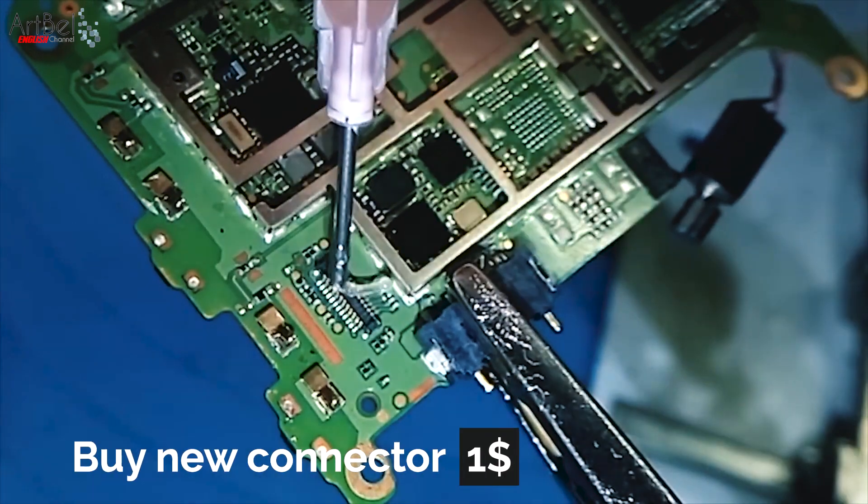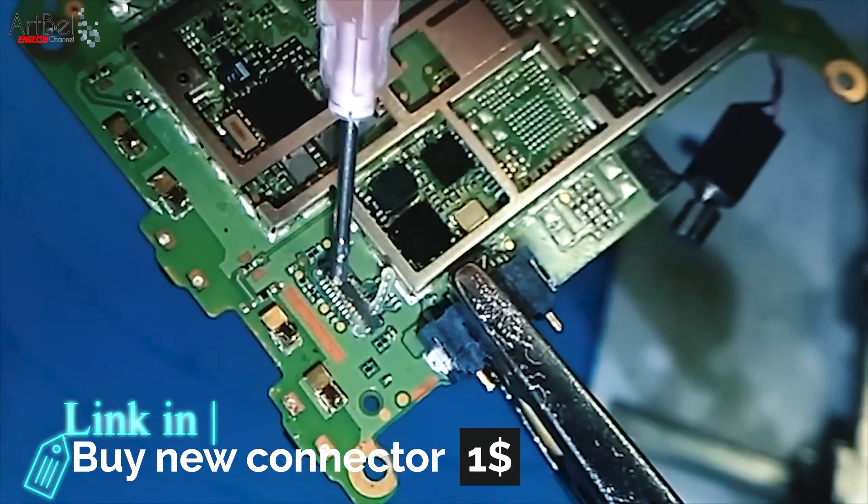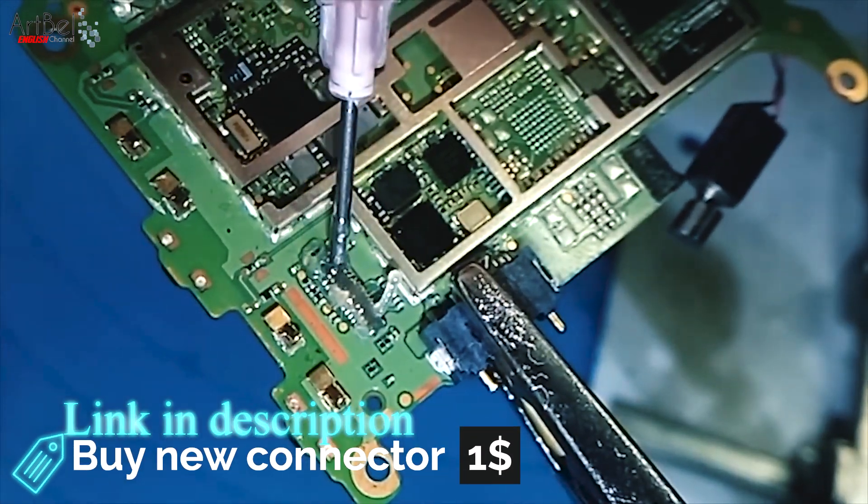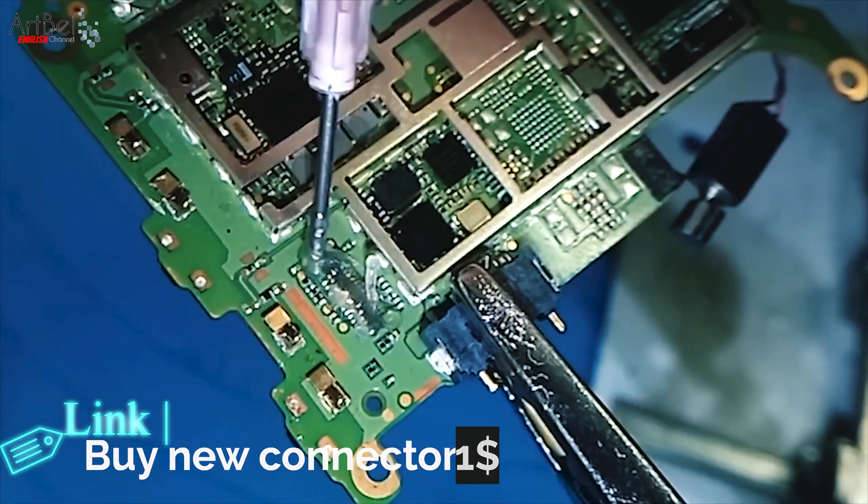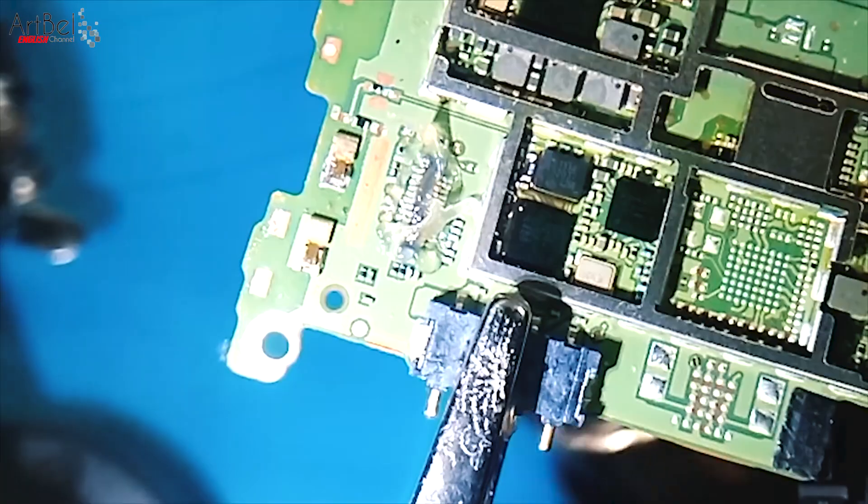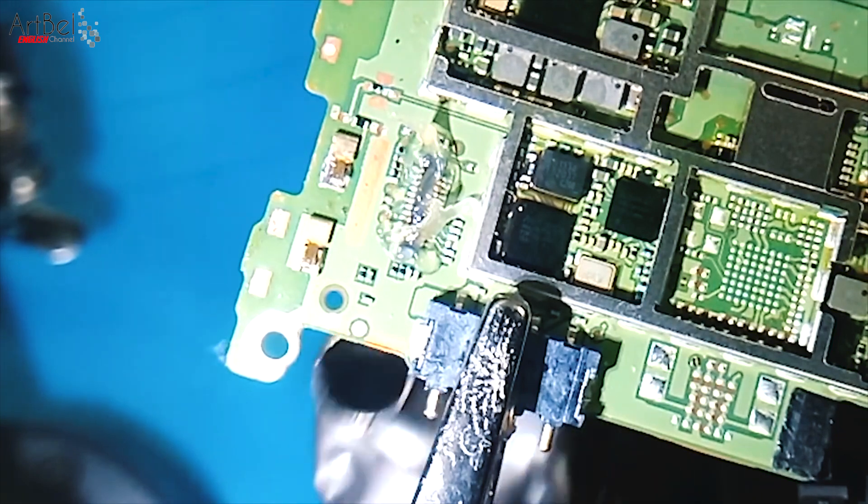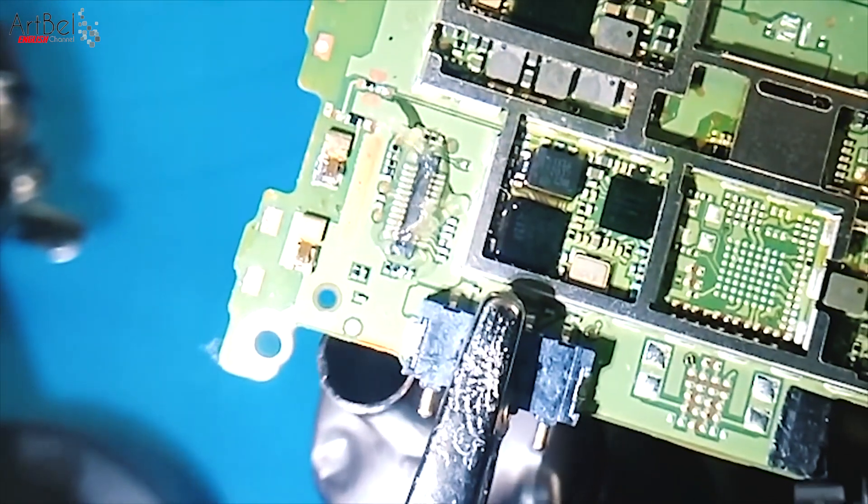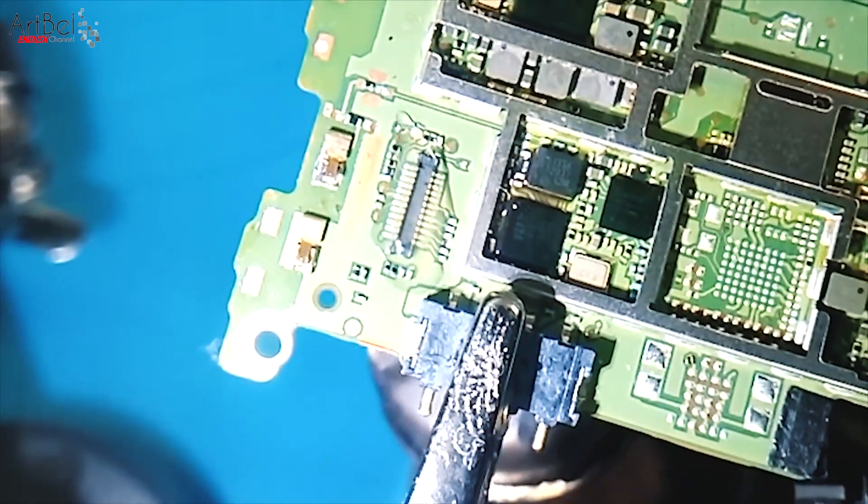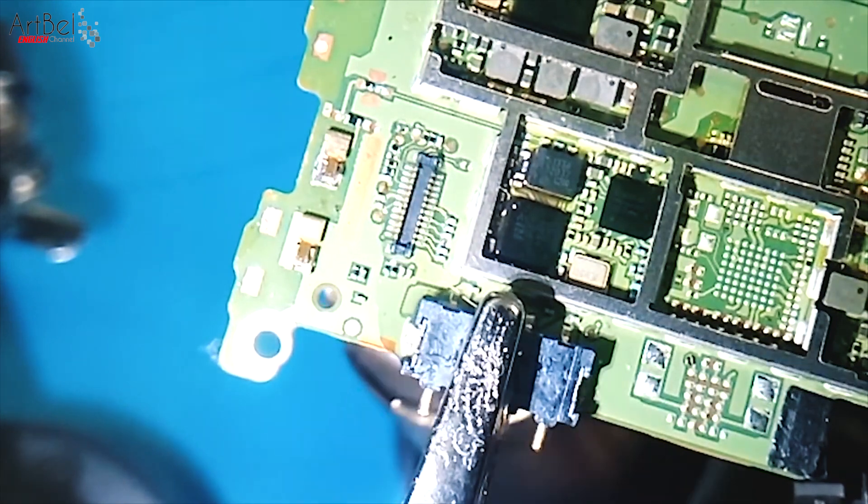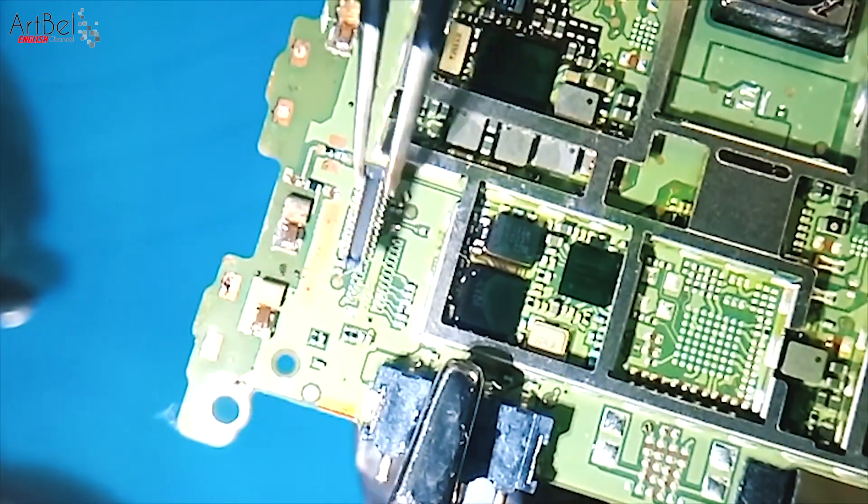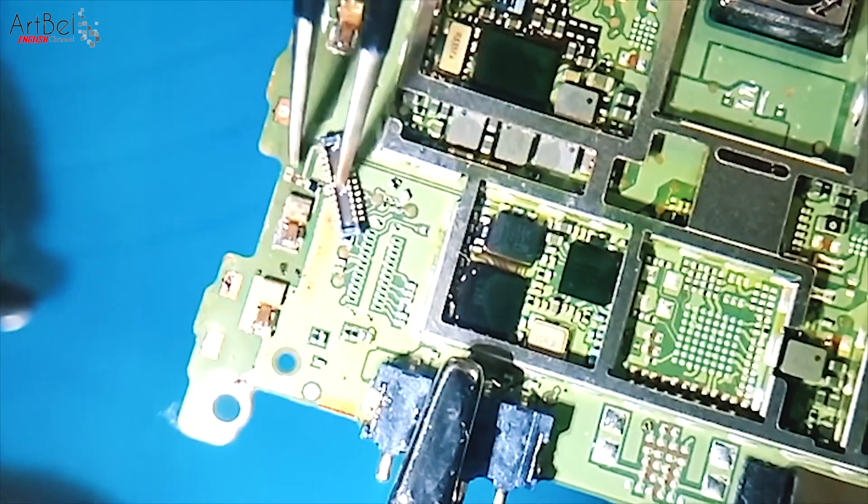Now going to remove the intact connector from the board. Fix the board, apply flux and heat the board from below by adding a little temperature so as not to melt the plastic of the connector. And warm until the connector starts to move.